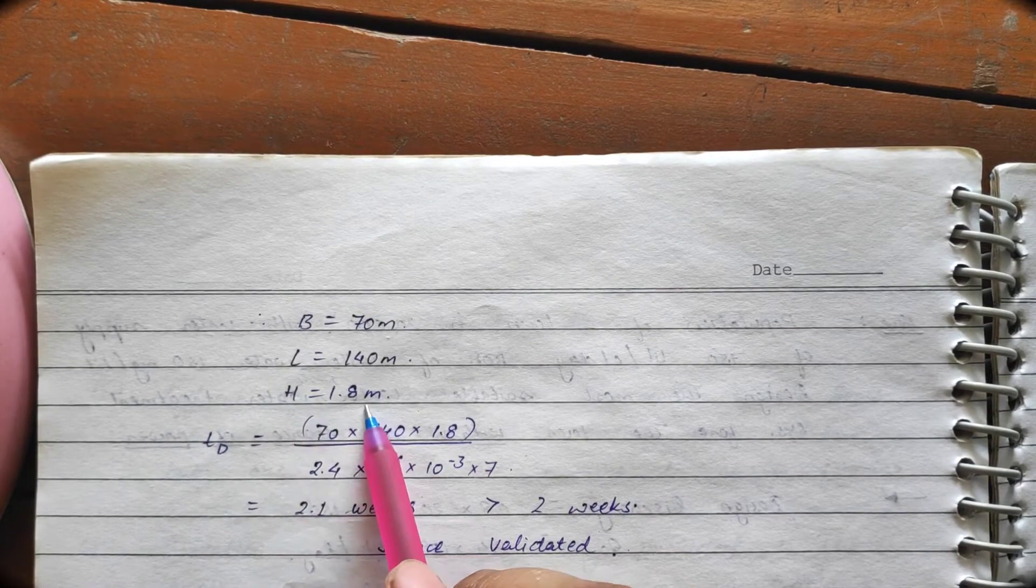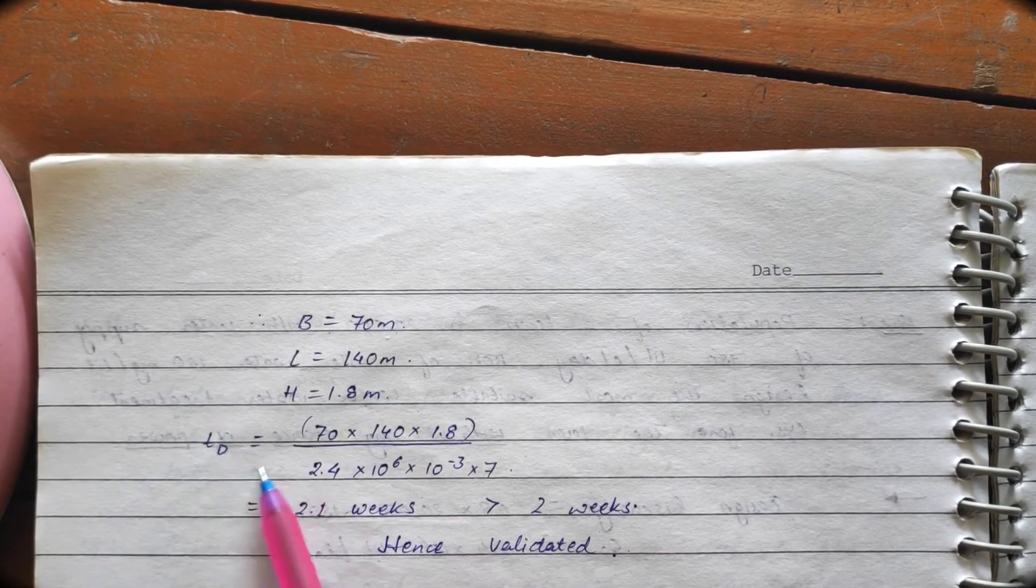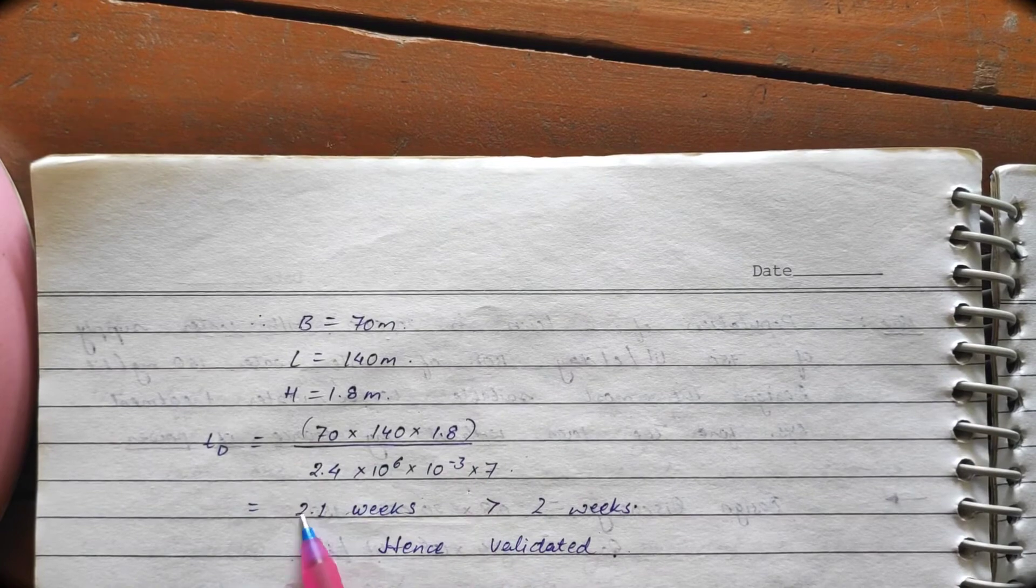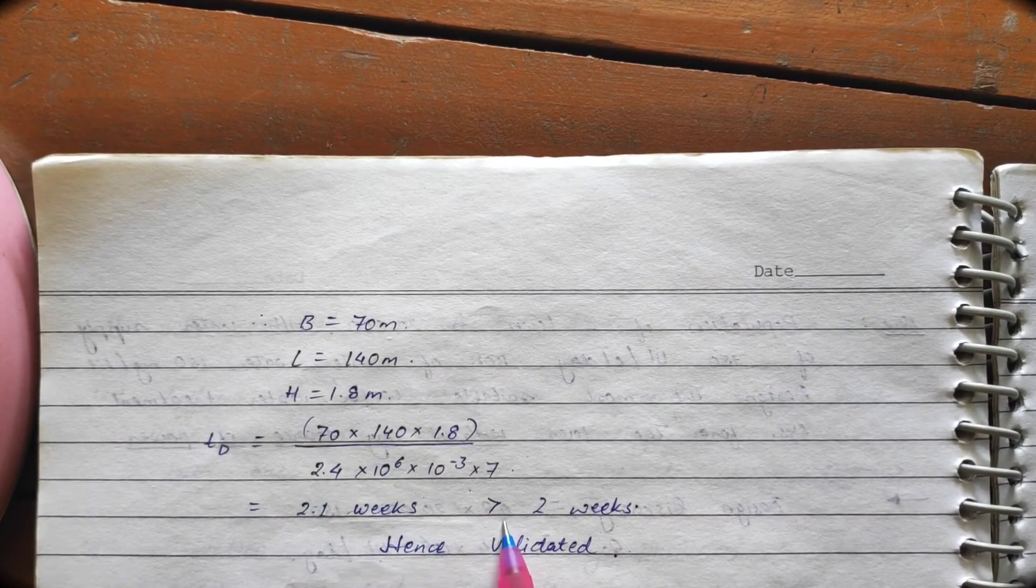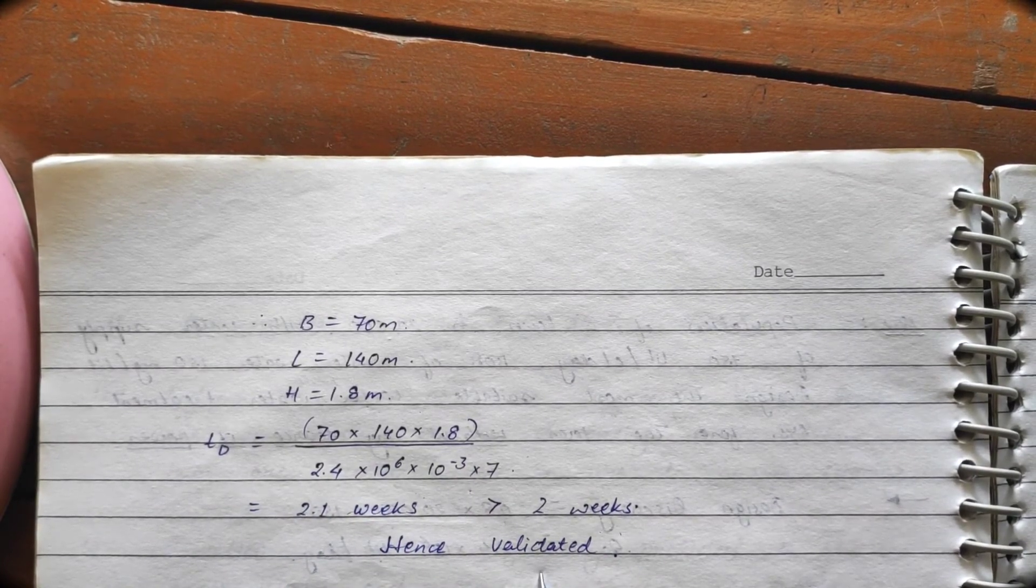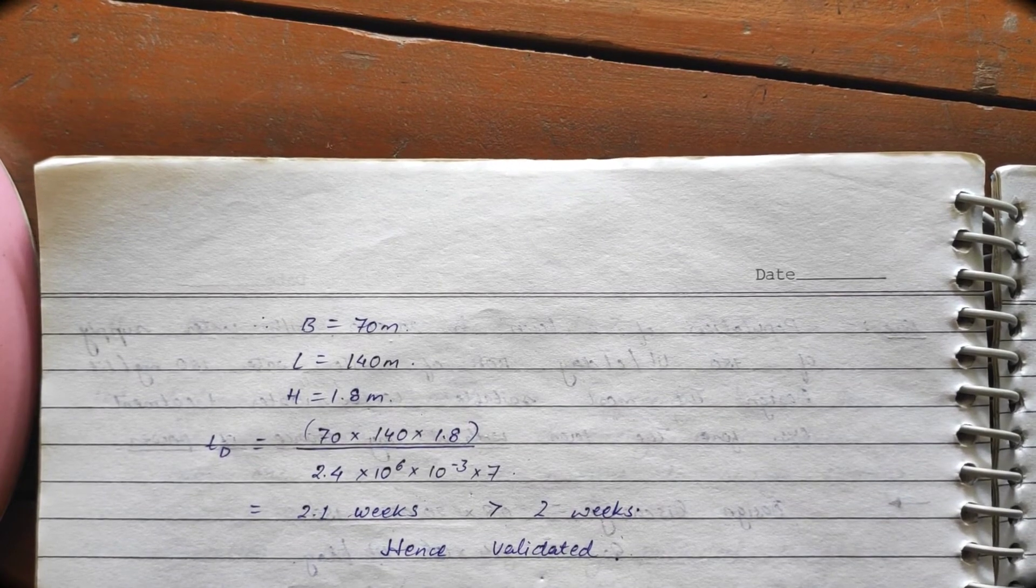Height or depth to be 1.8. So, from here we can calculate Td equals to this way. And it comes out to be 1.2 weeks. Which is greater than 2 weeks. Hence, this design is validated.